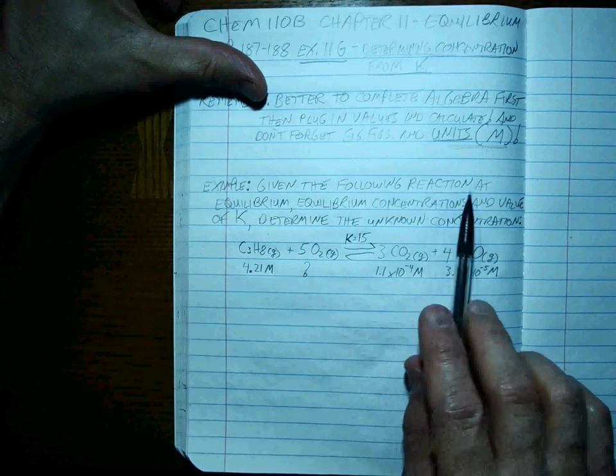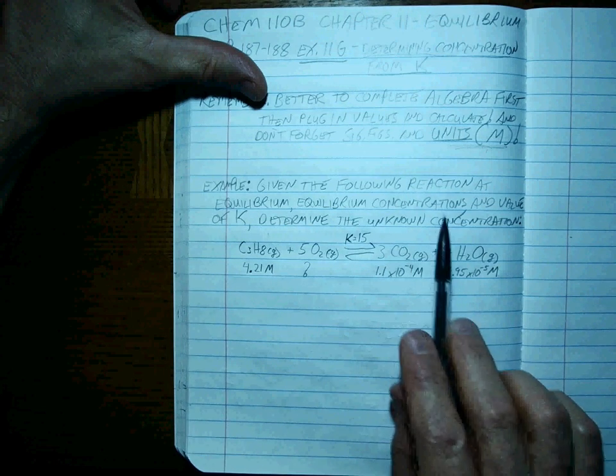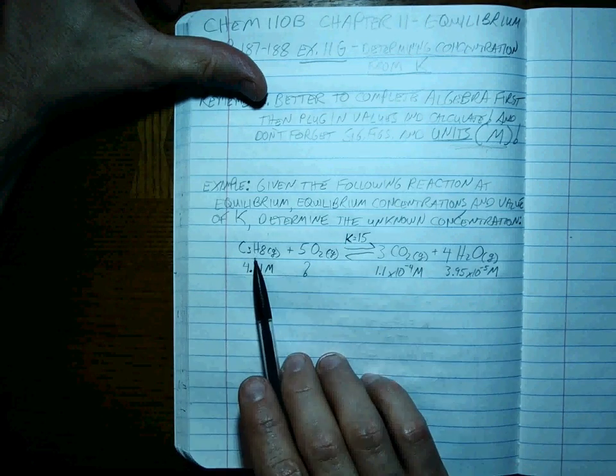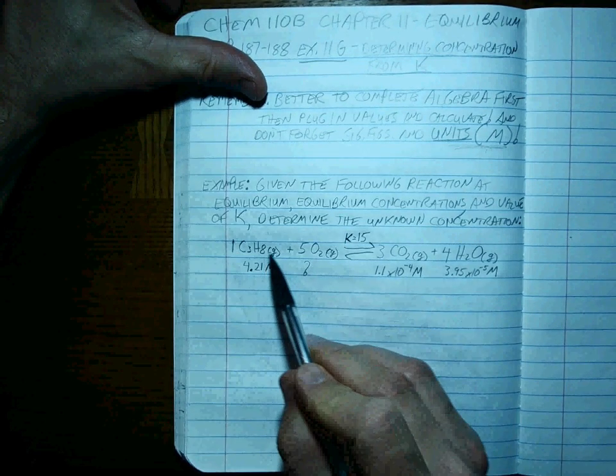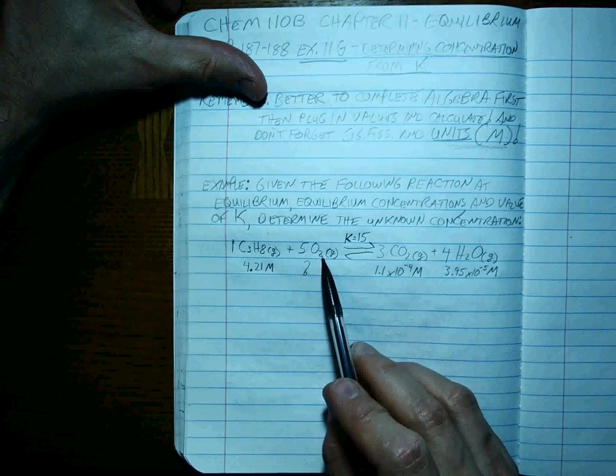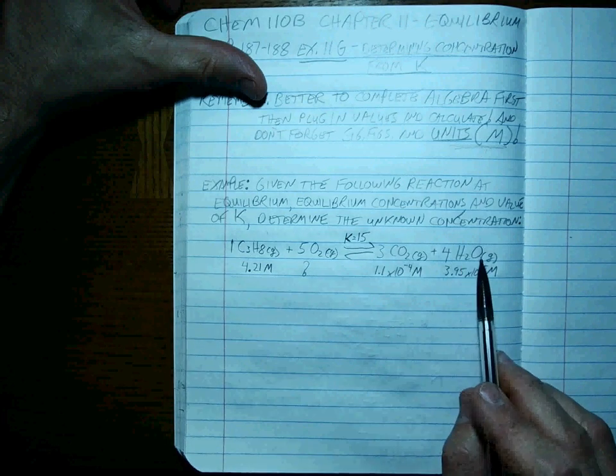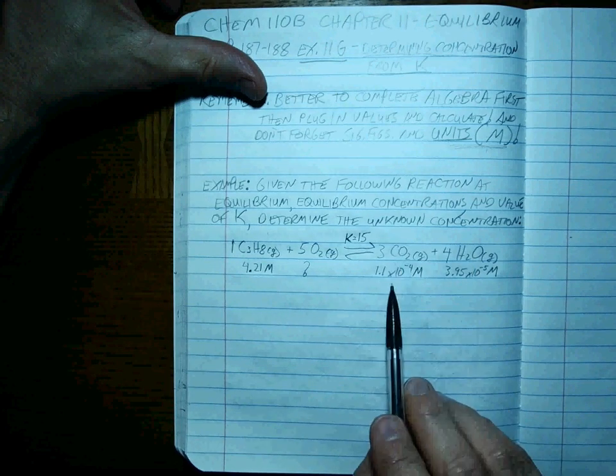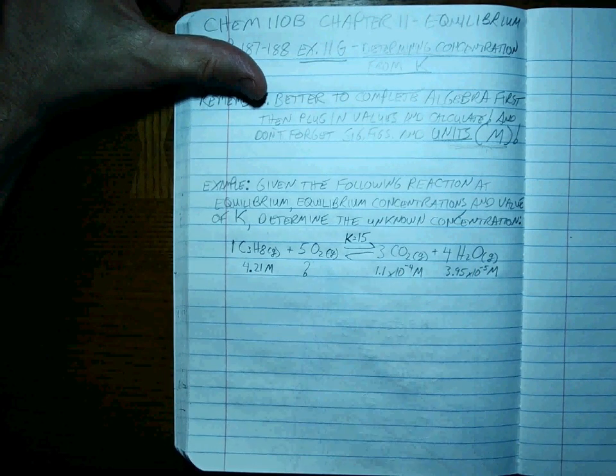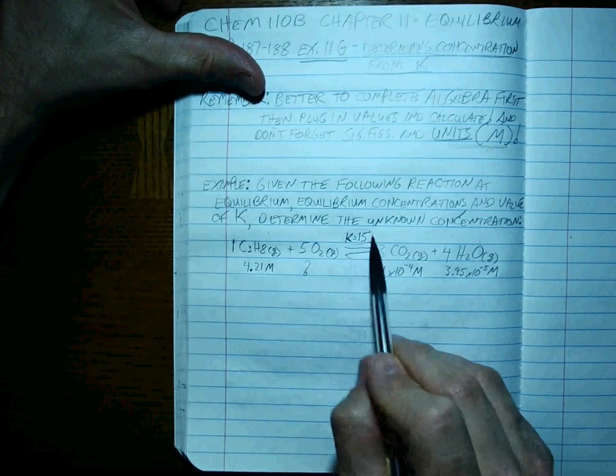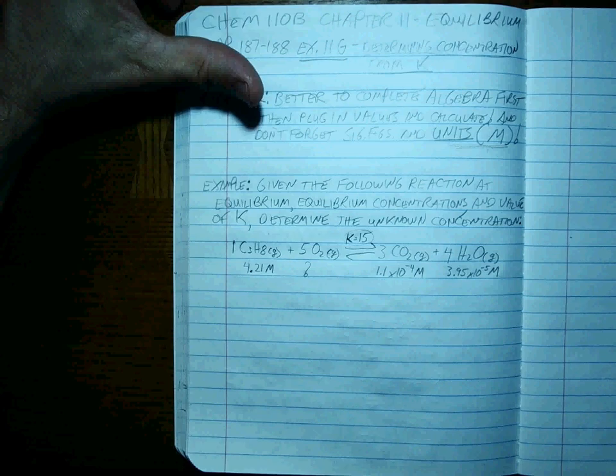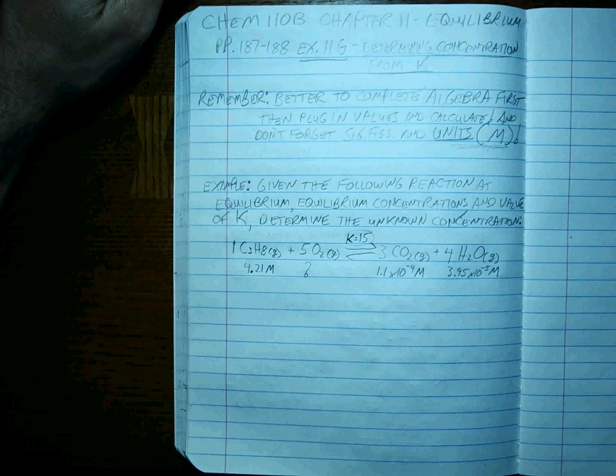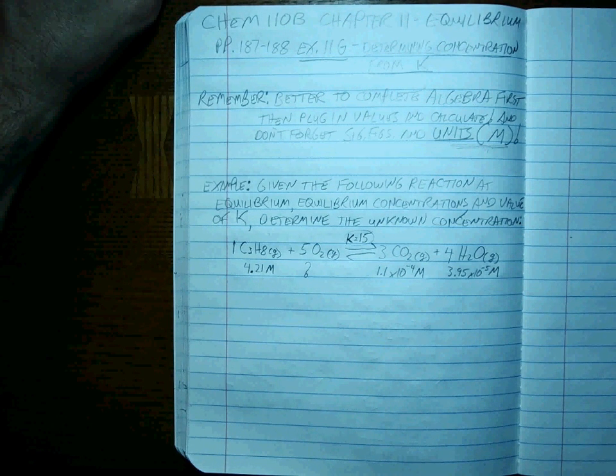Let's read the question and see where we're at. Given the following reaction at equilibrium, the equilibrium concentrations and the value of K, determine the unknown concentration. So we've got one propane plus five oxygen gases makes three carbon dioxide gases and four water in the steam phase. We're given this concentration, that concentration, and that concentration, and we want to find the O2. We're also given K is equal to 15.